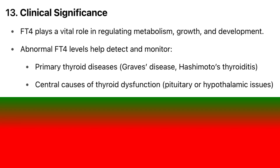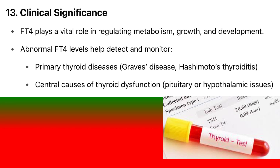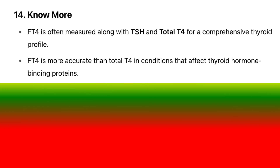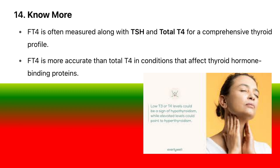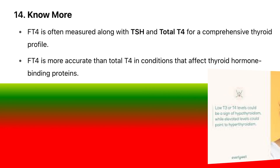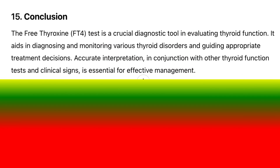FT4 plays a vital role in regulating metabolism, growth, and development. Abnormal FT4 levels help detect and monitor primary thyroid diseases — Graves' disease, Hashimoto's thyroiditis — and central causes of thyroid dysfunction such as pituitary or hypothalamic issues. FT4 is often measured along with TSH and total T4 for a comprehensive thyroid profile, and is more accurate than total T4 in conditions affecting thyroid hormone binding proteins.